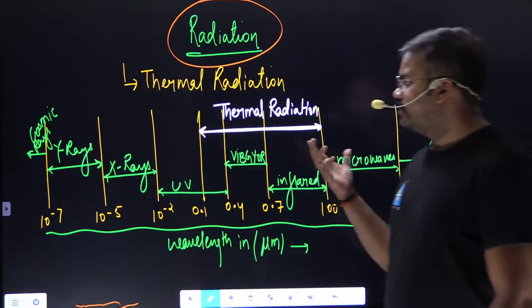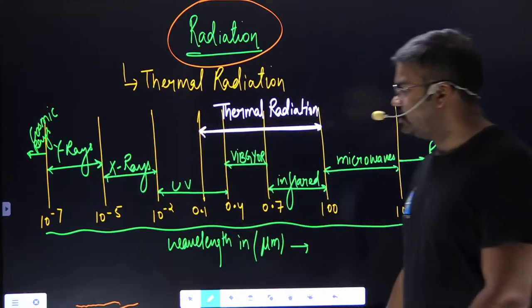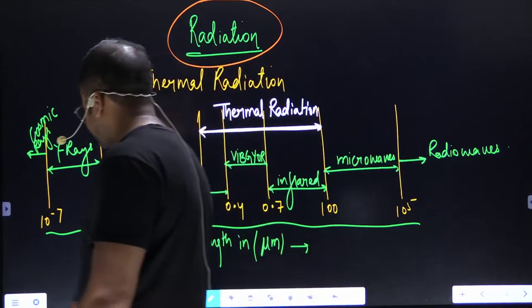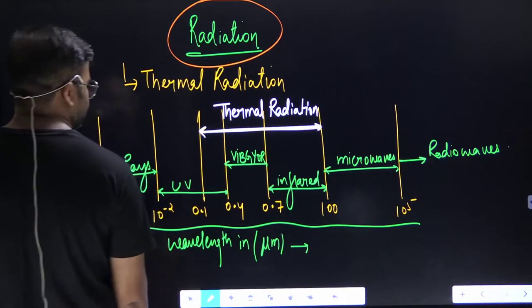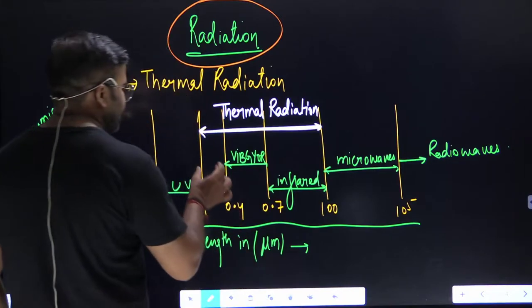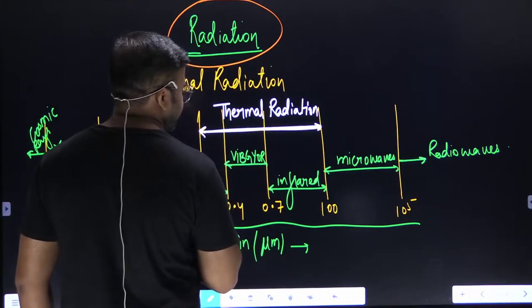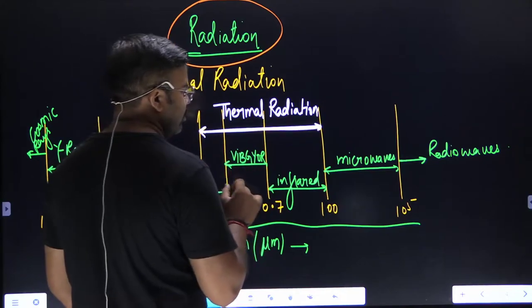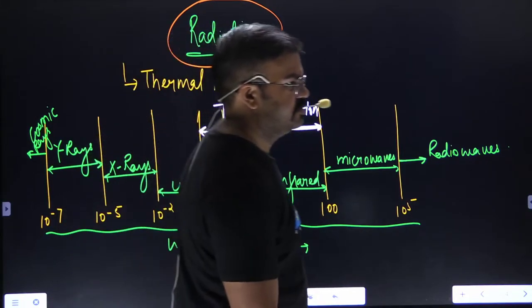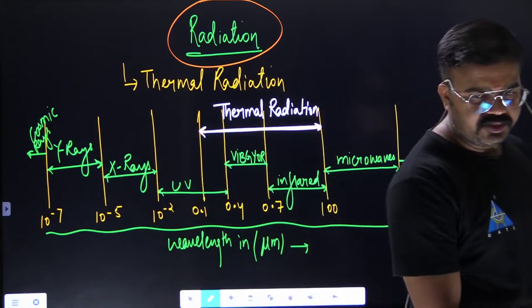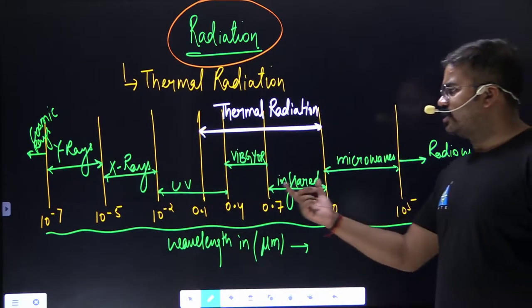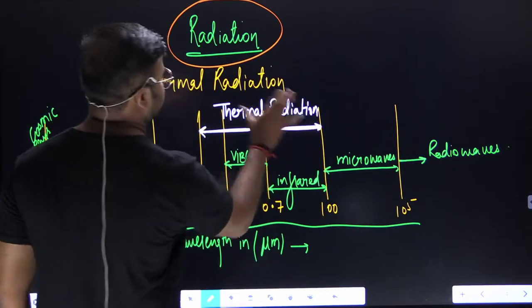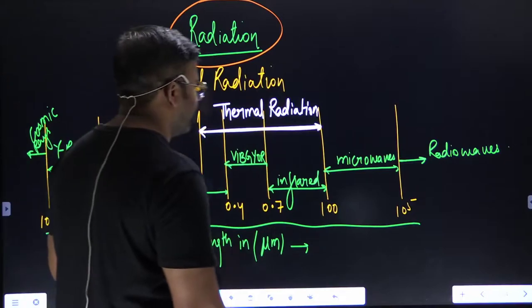If we talk about thermal radiation, what does it contain? It contains a fragment of UV, the entire spectrum of visible, and the entire spectrum of infrared. But what about the other ones? They are radiation but not thermal radiation.